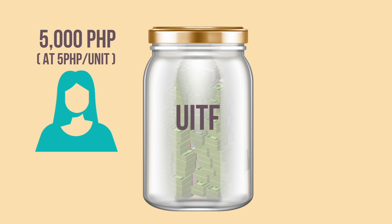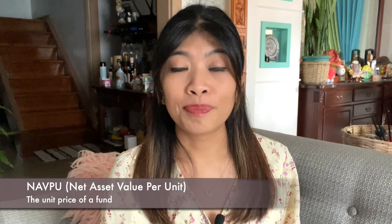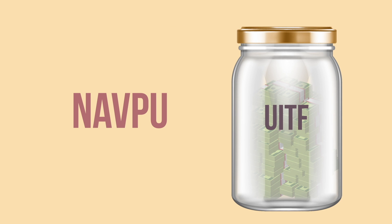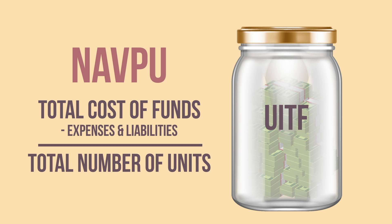This allows you to easily buy and sell a piece of the investment jar. The bank will pay you the corresponding amount based on the NAVPU, or Net Asset Value Per Unit, at the time of redemption. The NAVPU is the unit price of a fund — it tells you how much each unit or share of the fund is worth at a specific point in time. The NAVPU is calculated by dividing the total value of the funds in the jar, minus expenses and liabilities, equally among all units, helping you know the value of your share.